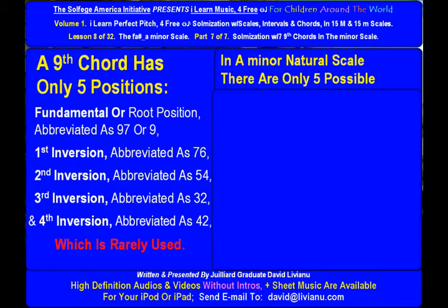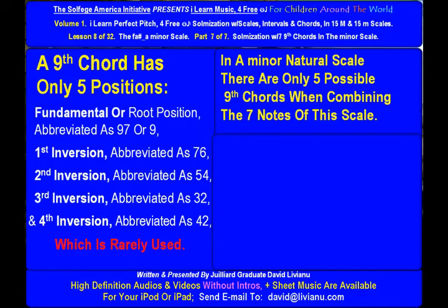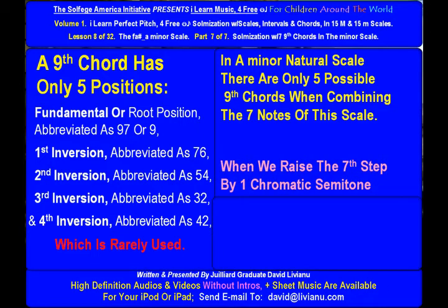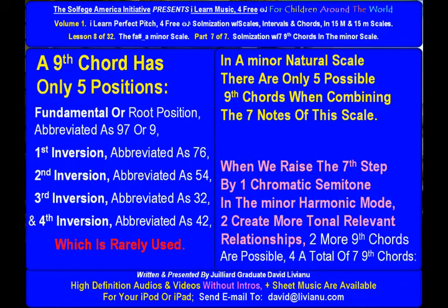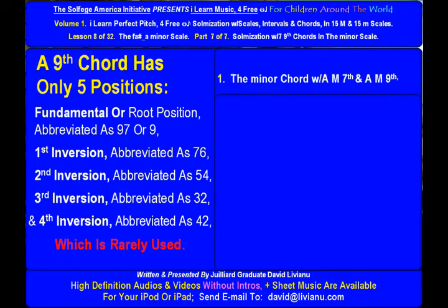In a minor natural scale, there are only 5 possible ninth chords when combining the seven notes of this scale. When we raise the seventh step by one chromatic semitone in the minor harmonic mode to create more tonal relevant relationships, two more ninth chords are possible for a total of seven ninth chords.